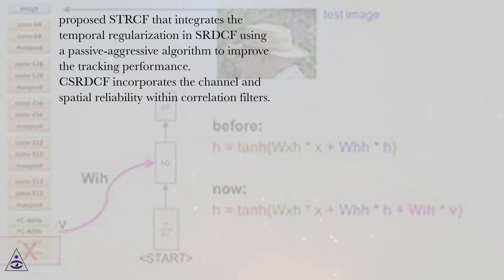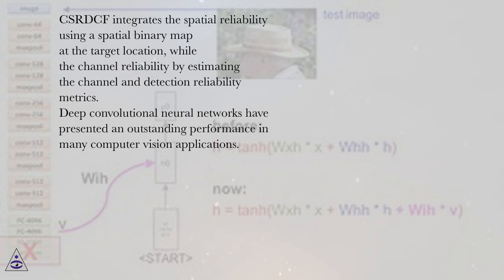CSRDCF incorporates the channel and spatial reliability within correlation filters. CSRDCF integrates the spatial reliability using a spatial binary map at the target location, while the channel reliability by estimating the channel and detection reliability metrics.